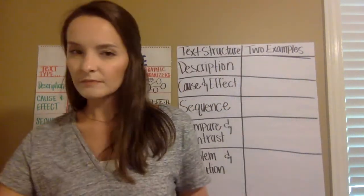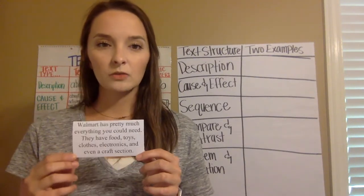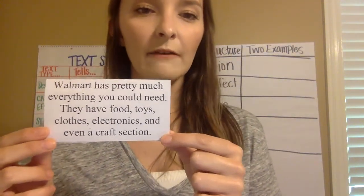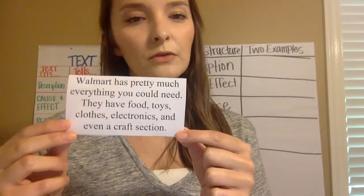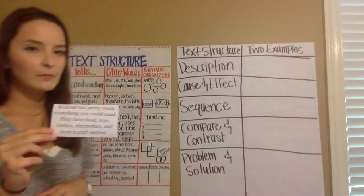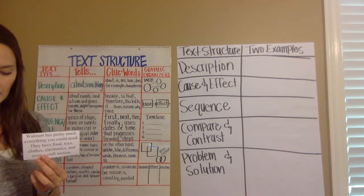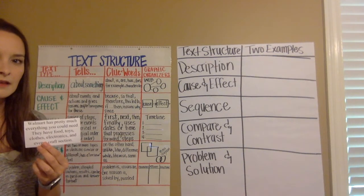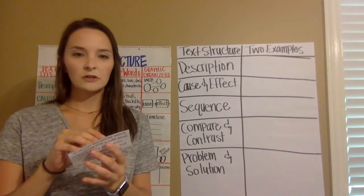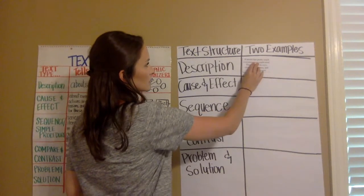Now we're going to read some task cards and sort them together. First card: Walmart has pretty much everything you could need — they have food, toys, clothes, electronics, and even crafts. If it's listing or telling you all about something, that's a description. So we're going to stick that one next to description.